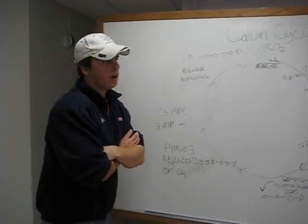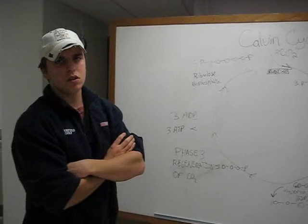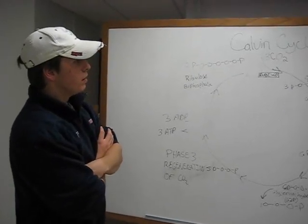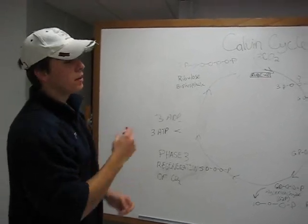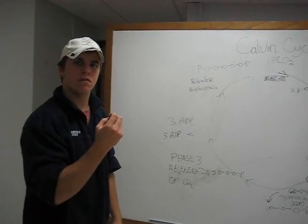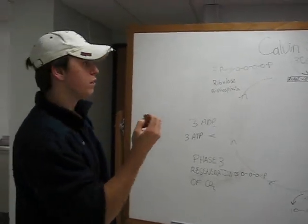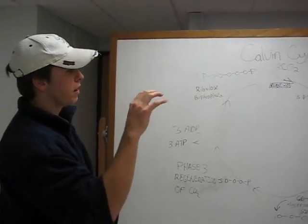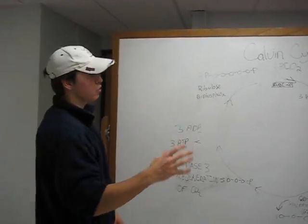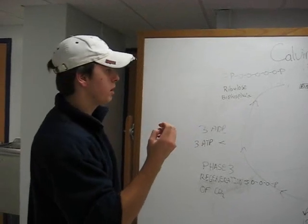Now we're at the Calvin cycle, also known as the dark reactions of photosynthesis. The initial part of this phase is that CO2 is taken in from the atmosphere through the stomata of each leaf. From there, the CO2 is transported into the chloroplast, specifically the stroma, which is the inner part of the chloroplast.